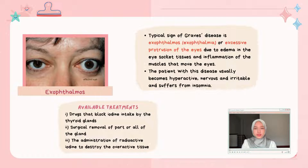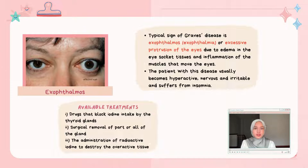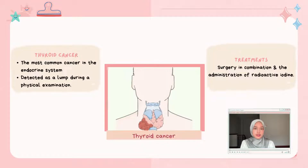Graves' disease can be treated by drugs that block iodine intake by the thyroid gland, surgical removal of part or all of the gland, or administration of radioactive iodine to destroy overactive tissue. Thyroid cancer can be detected as a lump during a physical examination and treated through surgery in combination with administration of radioactive iodine.